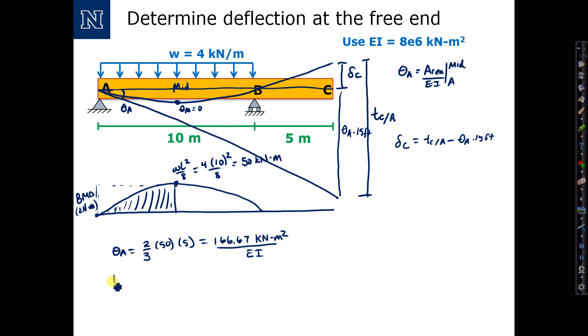Now T from C with respect to A is equal to x bar times the area, and it's the area between area of the diagram from A all the way to C, so it's the entire bending moment diagram.